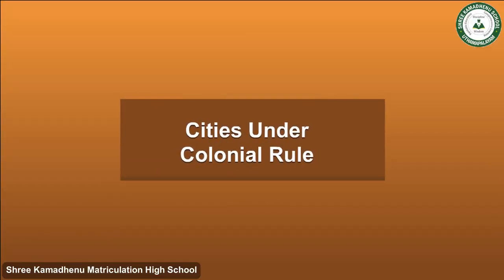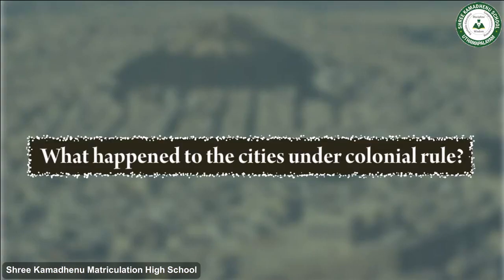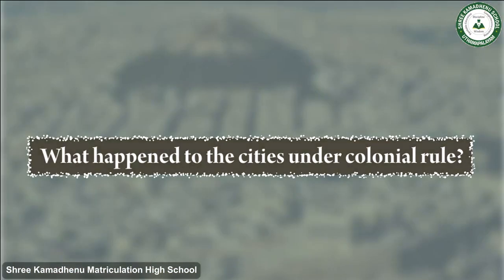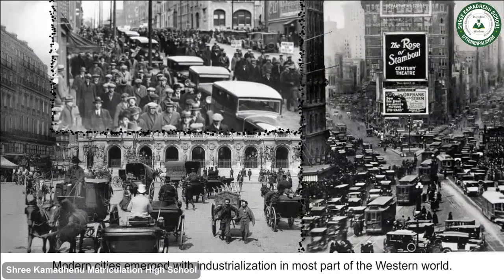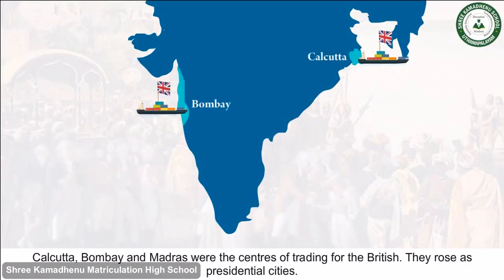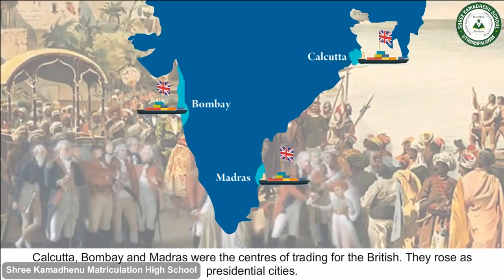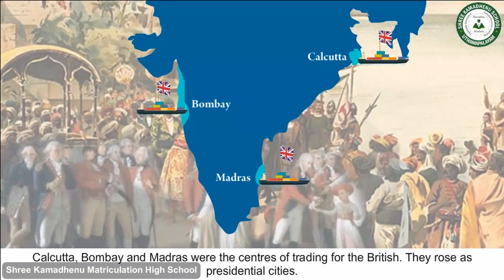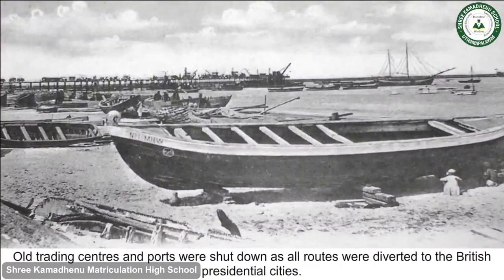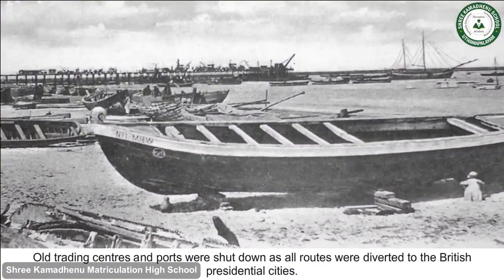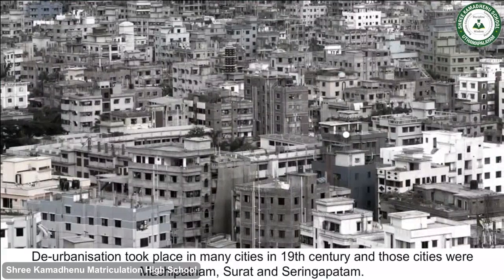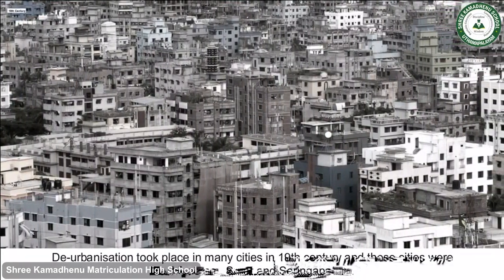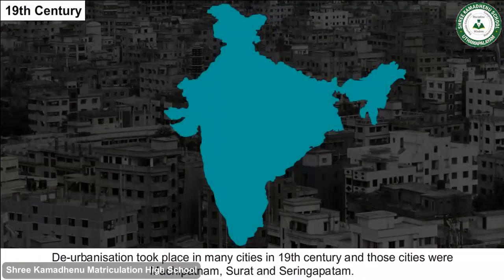Cities Under Colonial Rule: Modern cities emerged with industrialization in most parts of the Western world. Calcutta, Bombay and Madras were the centers of trading for the British and rose as presidential cities. Old trading centers and ports were shut down as all routes were diverted to these British presidential cities. De-urbanization took place in many cities in the 19th century, including Machipatnam, Surat and Seringapatam.